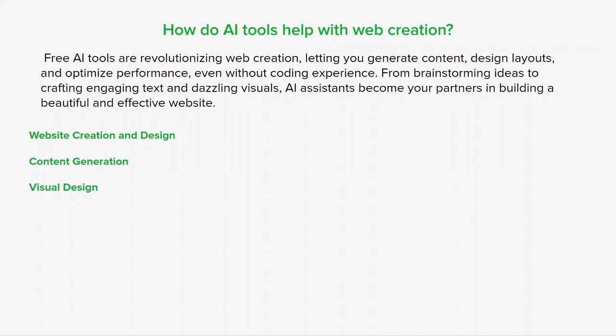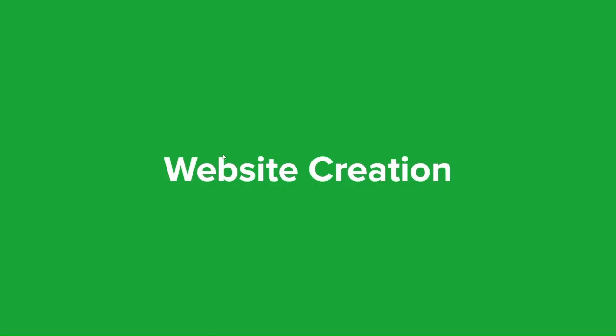The first tool we're going to look at for website creation is Jimdo — a user-friendly AI website builder with a free plan that offers sleek templates, mobile-optimized designs and basic e-commerce functionality. The next platform is Wix ADI, which is a free AI website builder that guides you through a simple questionnaire to create a personalized website with tailored designs and features. It's great for beginners who want a quick and easy solution.